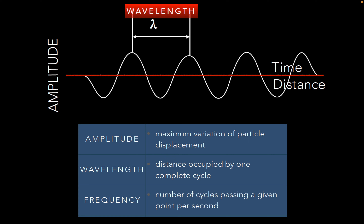Frequency is the number of cycles passing by in one second. For example, if three wavelengths occur in one second, the frequency is three hertz. Hertz means how many cycles are happening per second. So one second equals a given number of cycles, and that count gives you the frequency in hertz.